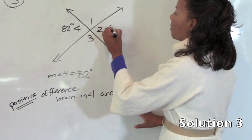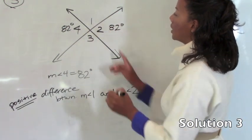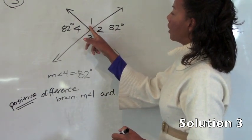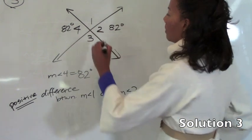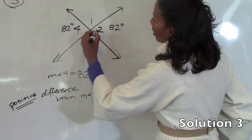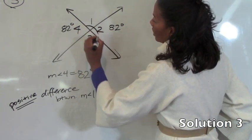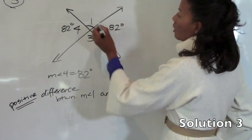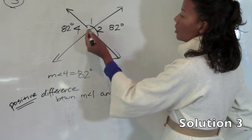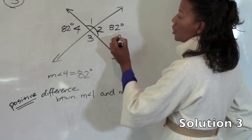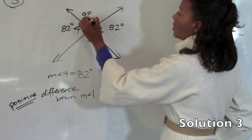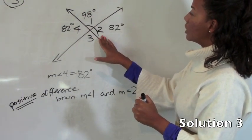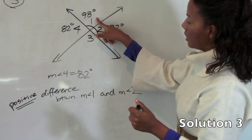So angle 2 is simple. It's just 82 degrees because it's a vertical angle with 4, and the measures of angle 1 and 2 are actually supplementary. You'll see that they fall along this straight line. So since they fall along a straight line and a line is 180 degrees in measure, the measure of angle 1 is simply 180 minus this 82. It's what's left from 180 degrees once you take into account the measure of angle 2. So the measure of angle 1 is 98 degrees.